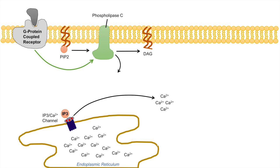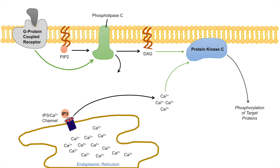Now that we have increased calcium and we also have DAG, there is another kinase important in this pathway: protein kinase C. DAG and calcium lead to the activation of protein kinase C, and once protein kinase C becomes activated, as its name suggests it's a kinase, it leads to phosphorylation of target proteins within the cell. This ultimately leads to the cellular response.